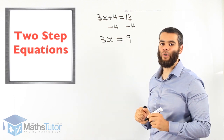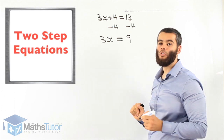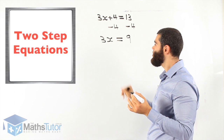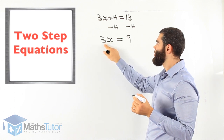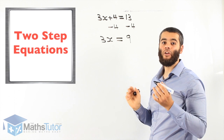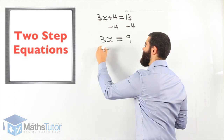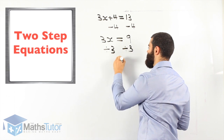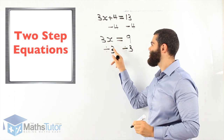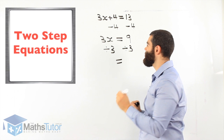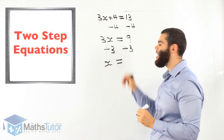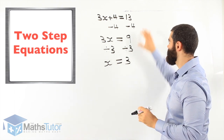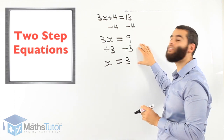We now have a one-step equation. We only have one numeral to get rid of. We know 3x means 3 times x, so the opposite of times is divide. So 3x divided by 3 is just 1x, and 9 divided by 3 is 3. Two-step equations — one step then two step, very easy.